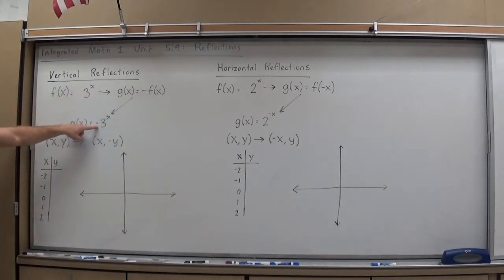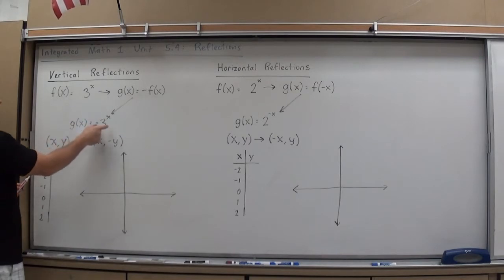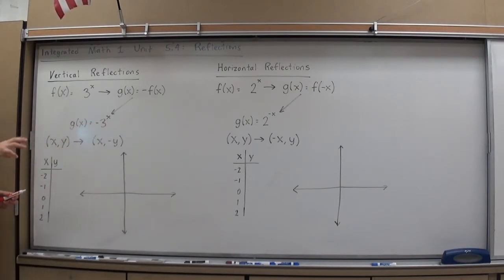When you see a negative out in front of the main portion of the function, in an exponential case in front of the base or the term in front there, in a linear it'd be out in front of the slope, it is going to do a vertical reflection.